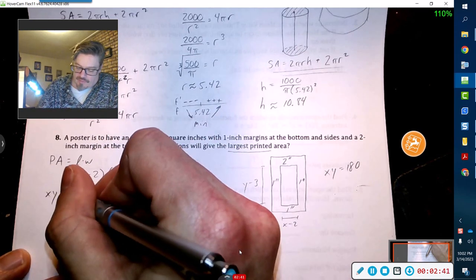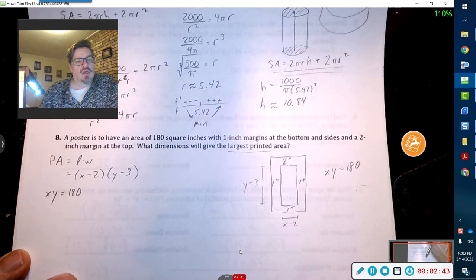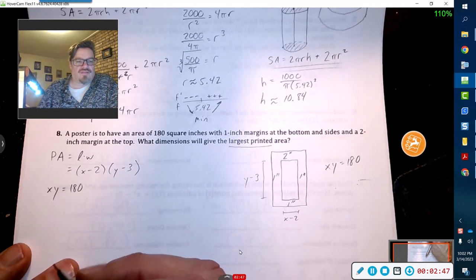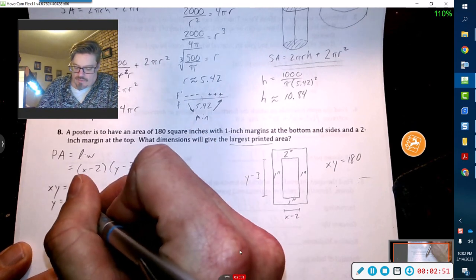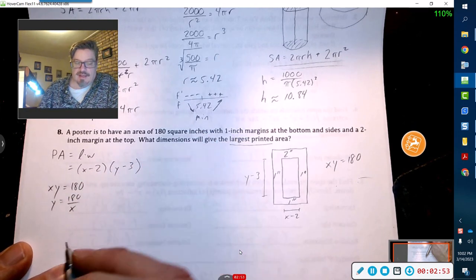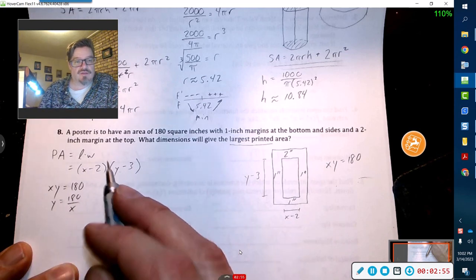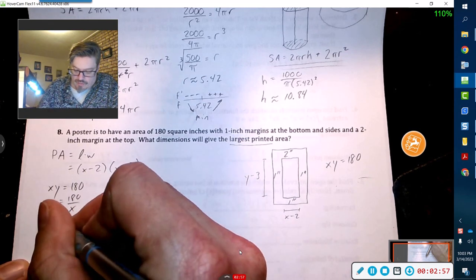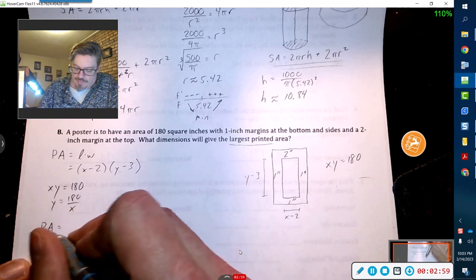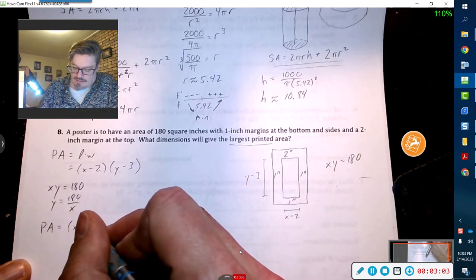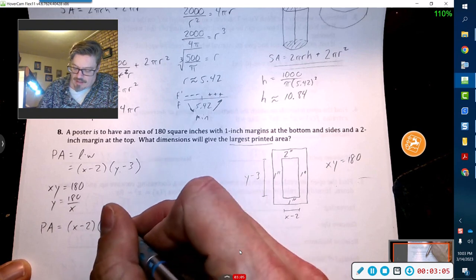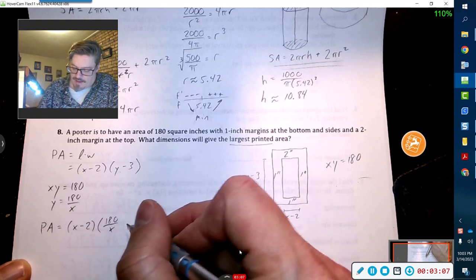It doesn't matter which one, but we just know that when we multiply them, their product has to be 180. Let's solve for y, so y equals 180 divided by x. And now this y is going to change, so our new equation function will be in terms of x.